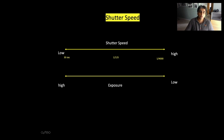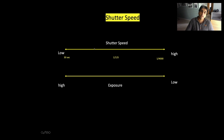On my camera I can get my shutter speed up to 30 seconds or up to 1/4000 or 1/8000 of a second. What this means is that if my shutter speed is set at 1/125, the shutter will stay open only for 1/125th of a second.